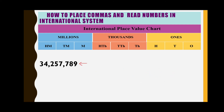Starting from the right: nine is ones, eight is tens, seven is hundreds, seven is thousands, five is ten thousands, two is hundred thousands, four is millions, and three is ten millions. We have three periods: the ones period (seven, eight, nine), the thousands period (two, five, seven), and the millions period (three, four).